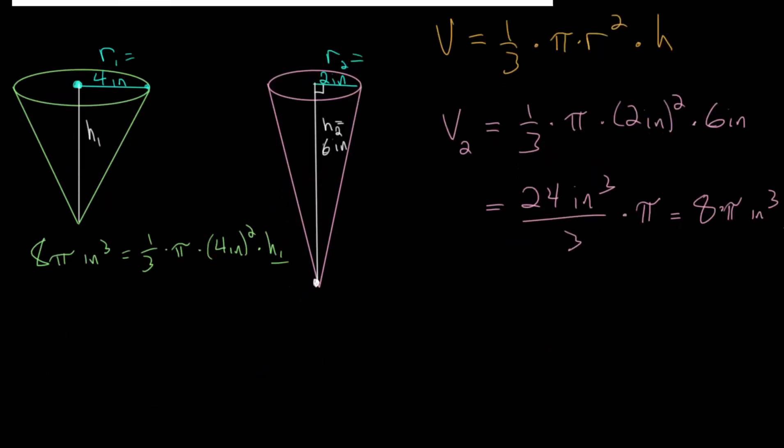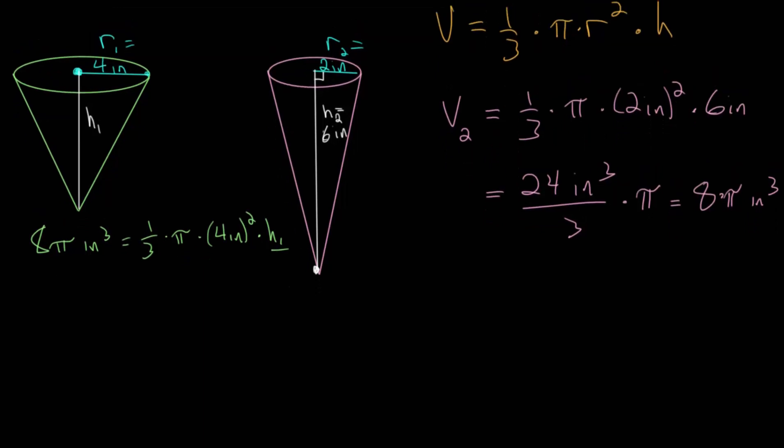First, we can notice that each side of the equation has π in it. So if we divide both sides by π, these would cancel out. And 4 squared is 16, which means on the right side, we get 16 square inches divided by 3.